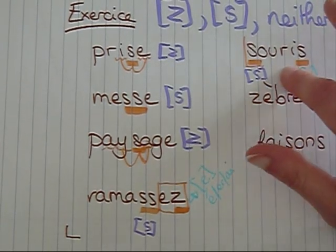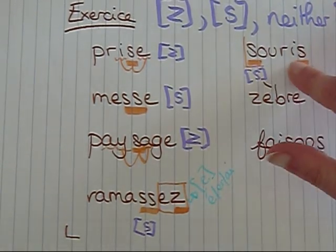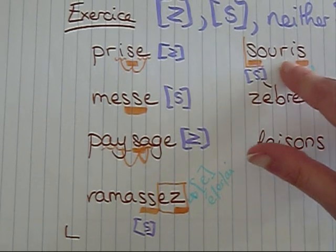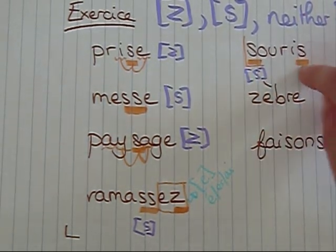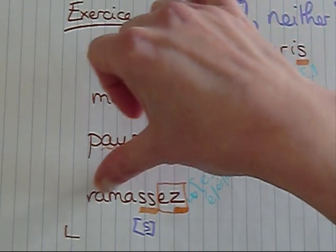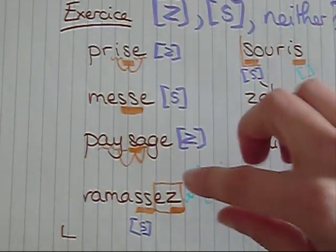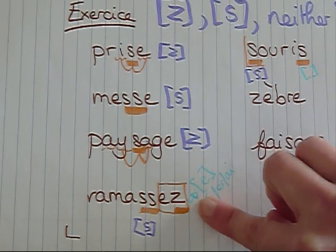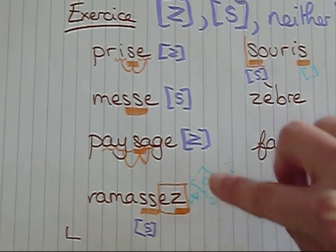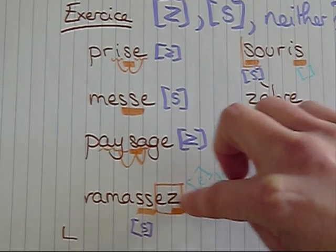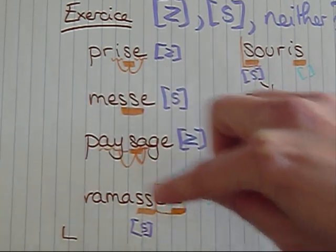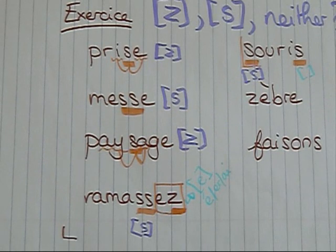And saying that, I'm realizing I didn't translate this one, so I'm going back now. Ramasser—that is to pick up. If it's ER, so here it's EZ, so it would be vous ramassez, you pick up. So typically, ramasser les déchets, to pick up litter, ramasser un stylo, to pick up a pen, etc. So if something's fallen off, when you're picking it up, it's ramasser.